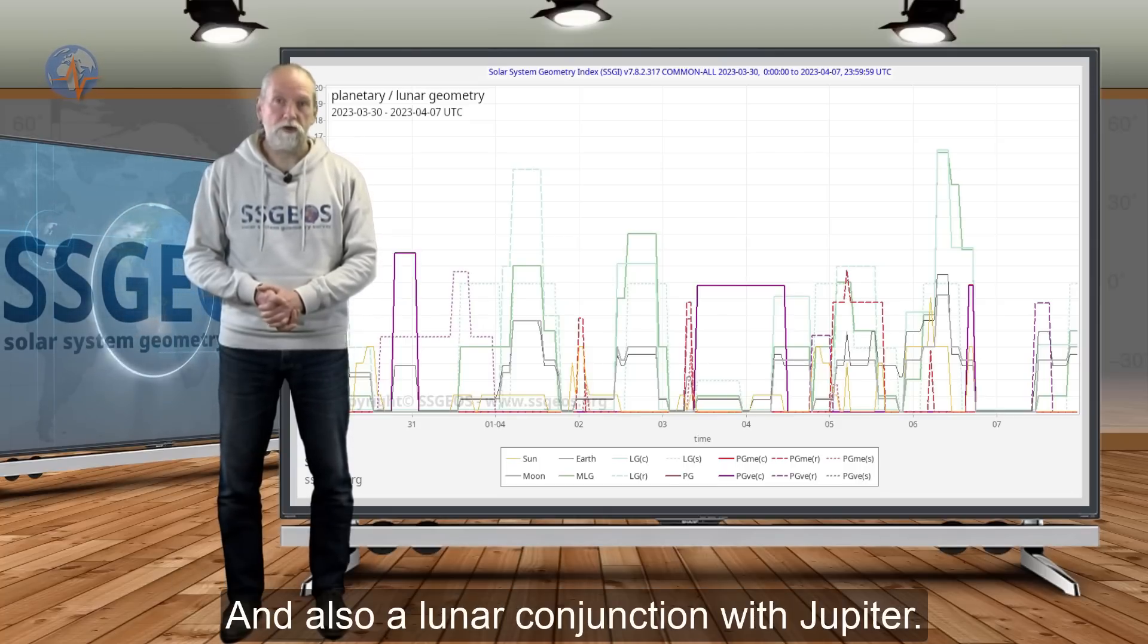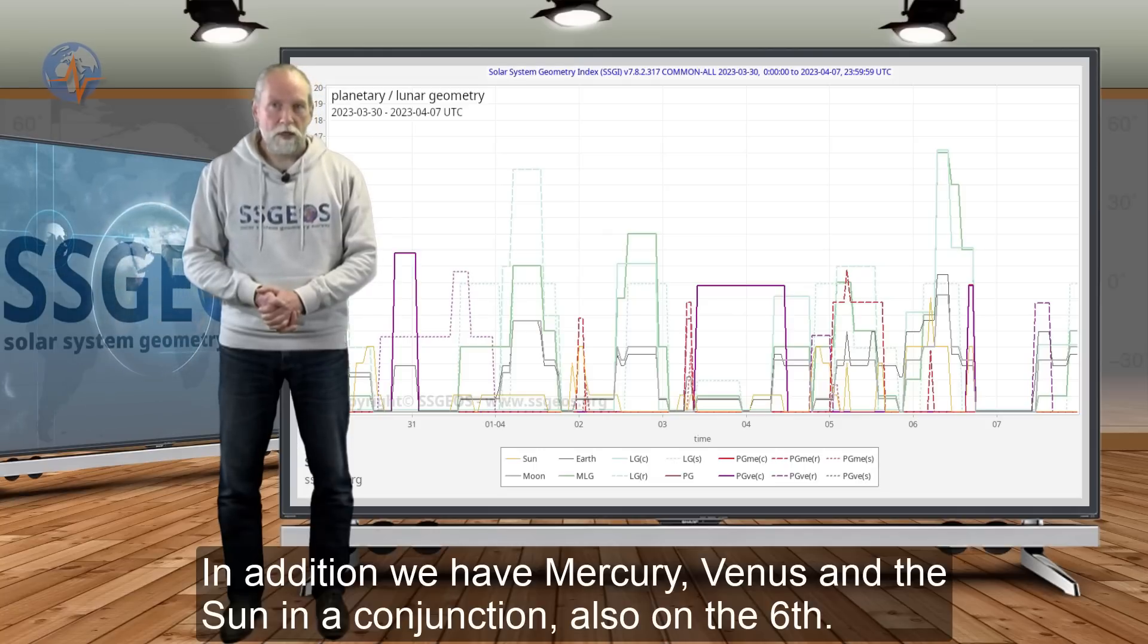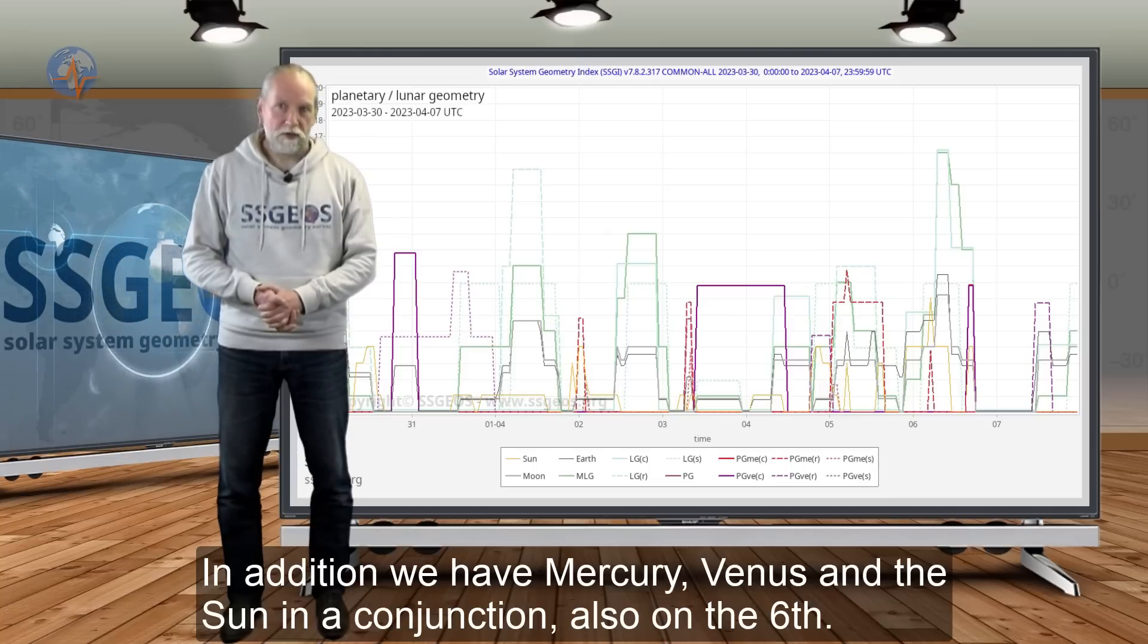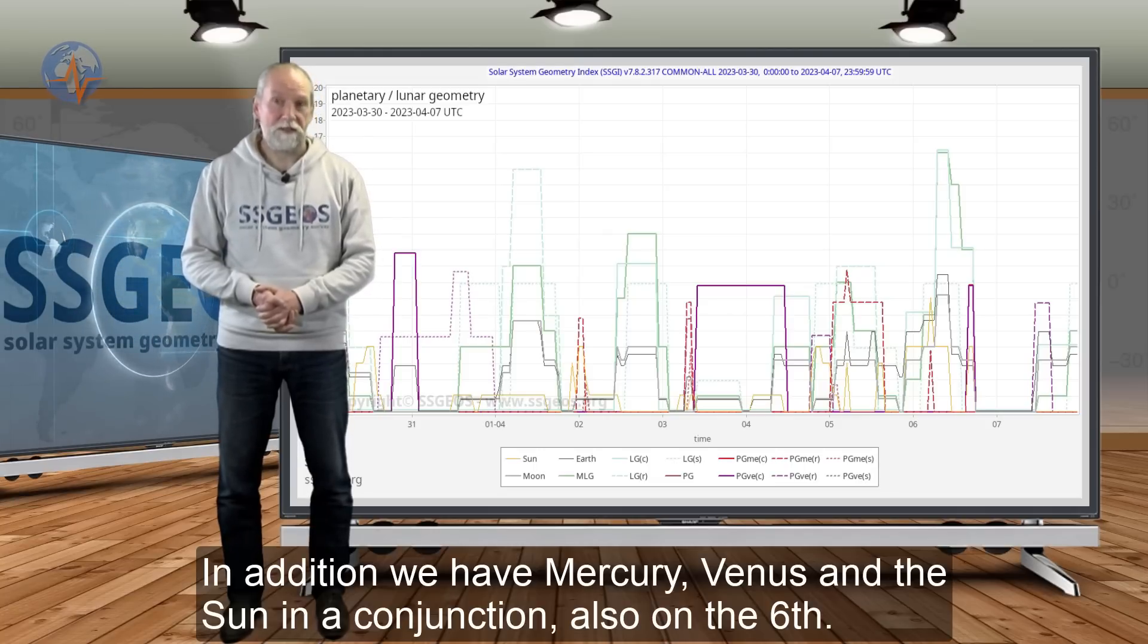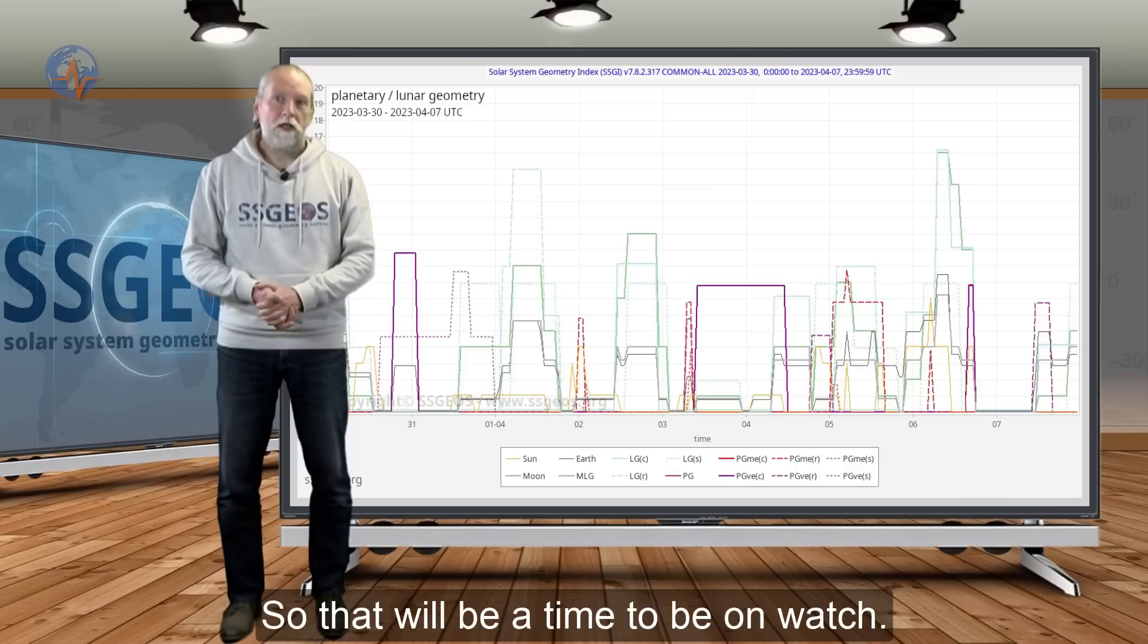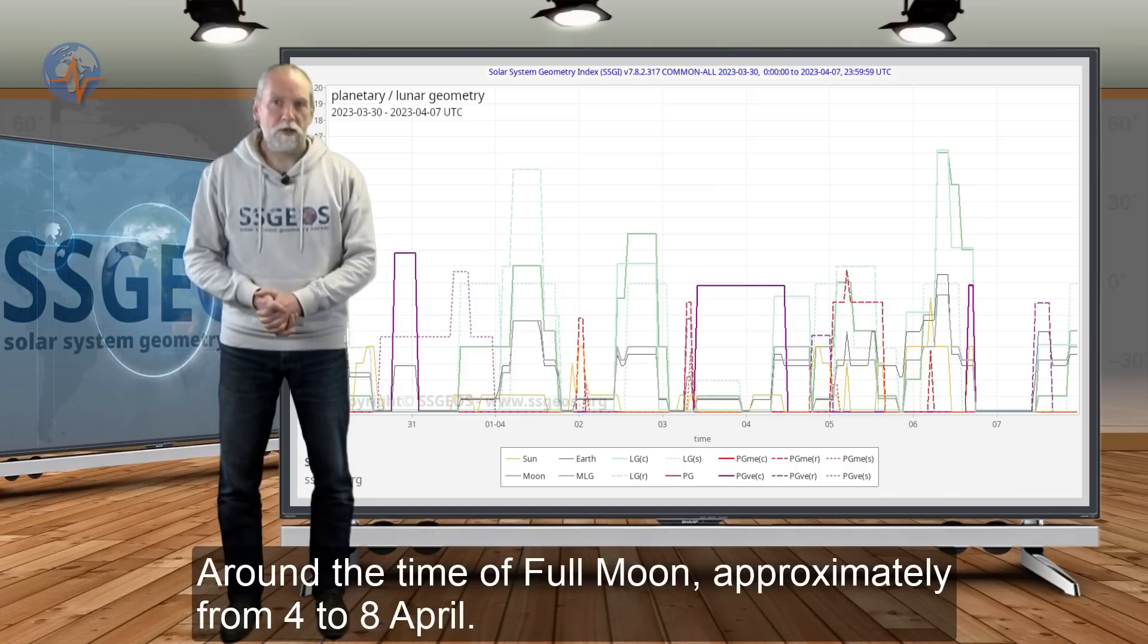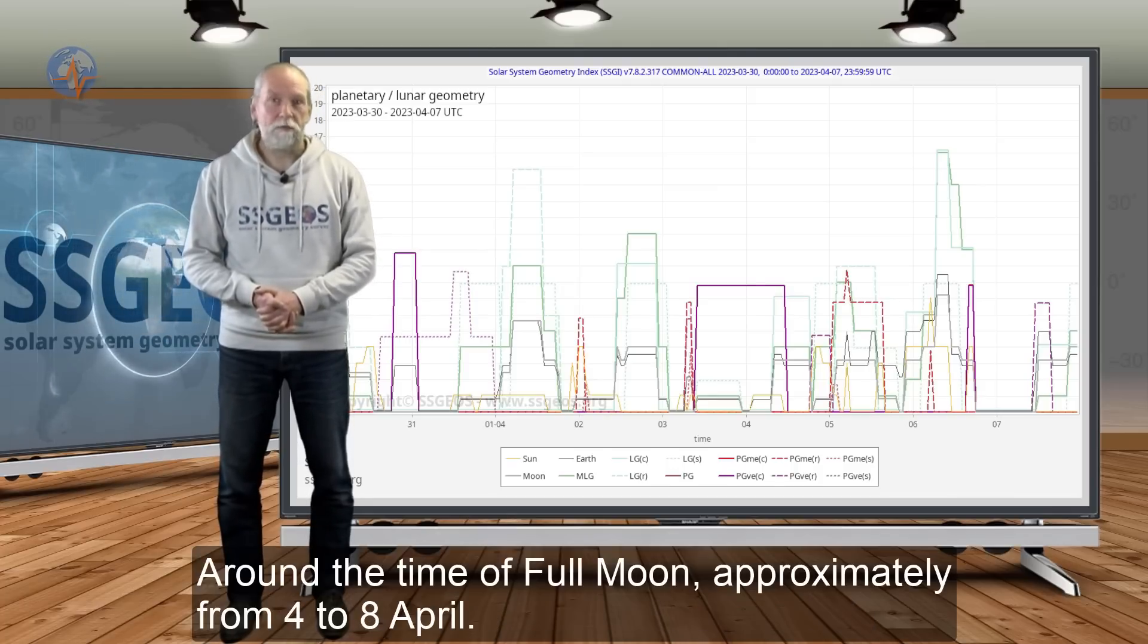That is the lunar conjunction with Jupiter, and in addition we have Mercury, Venus, and the Sun in a conjunction also on the 6th. So that will be a time to be on watch around the time of full moon, approximately from 4 to 8 April.